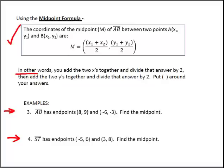Don't forget, this means, in other words, you add the two X's together and divide that answer by 2. Then, you add the two Y's together and divide that answer by 2. Don't forget to put parentheses around your answers because you are finding an actual point. So, you're going to need an ordered pair.